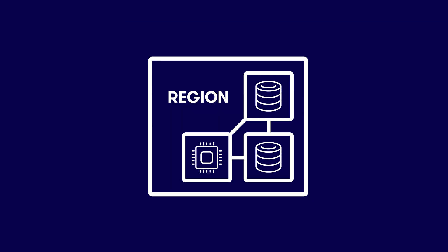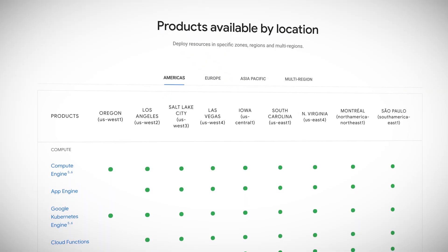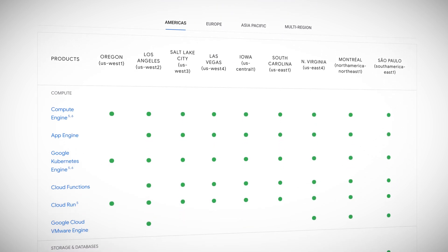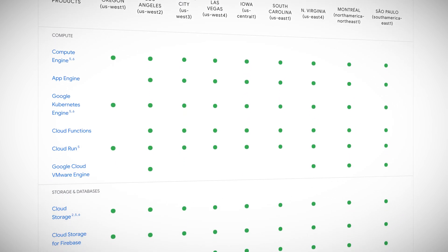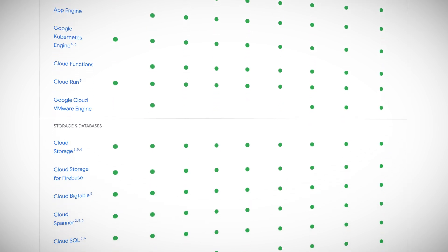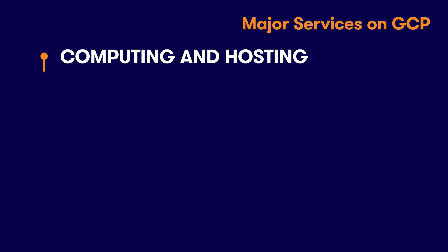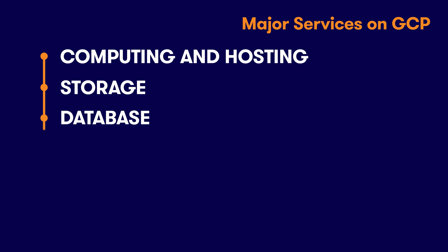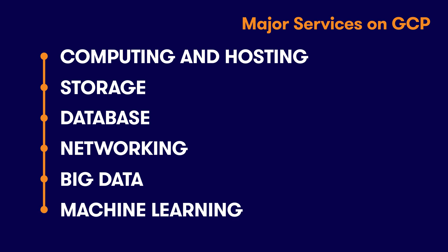And finally, zonal resources, including compute instances, are only available in one specific zone within one specific region. When deploying applications on GCP, you must select locations depending on the performance, reliability, scalability, and security needs of your organization. Each region offers a category of services, and some services are limited to specific regions. Here's a list of the major services of the Google Cloud Platform: computing and hosting services, storage services, database services, networking services, big data services, and machine learning services.